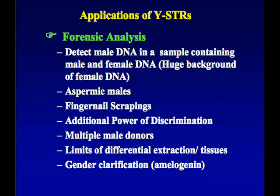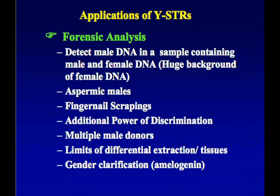There are also cases with aspermic males, where they don't produce sufficient sperm to be detected even with differential extraction, which selects for sperm cells over other cells to enrich the male and female fractions. But aspermic males still shed epithelial cells and lymphocytes, so if we focus on the Y chromosome, we don't have to worry about the female contribution. Additionally, for degraded samples where only the smallest amplicon-sized STRs generate a result, Y-STRs can add power to help exclude more individuals. Multiple male donors with a victim female background are sometimes hard to deconvolve, but with the Y chromosome and only two alleles per locus for most loci, it becomes a little easier.